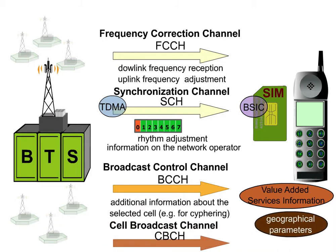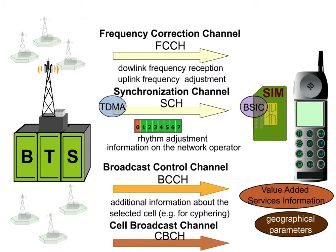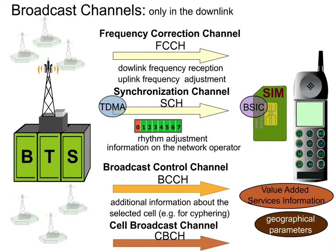The FCCH, SCH, BCCH, and CBCH are broadcast channels and exist only in the downlink. They are the first logical channels belonging to the common channels.